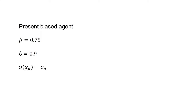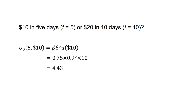For a second example, assume there is a present biased agent with beta equals 0.75, delta equals 0.9, and utility each period of u(x) equals x. Would this agent prefer $10 in 5 days (t equals 5) or $20 in 10 days (t equals 10)? The discounted utility of the $10 in 5 days, u(0, 5, 10), equals beta times delta to the 5 times utility of $10, which equals 0.75 times 0.9 to the 5 times 10, which equals 4.43.